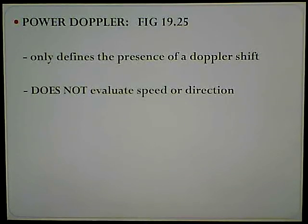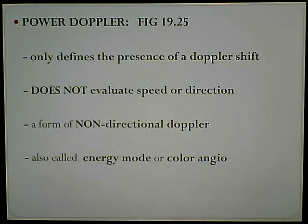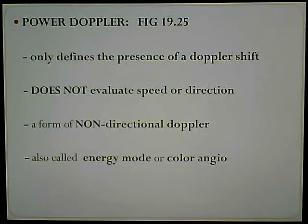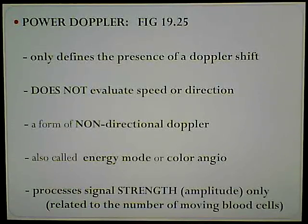Power Doppler - figure 1925. It only identifies the presence of a Doppler shift - it's just telling us that one is there. It does not evaluate speed or even direction. It just tells us that there is a Doppler shift there or some sort of flow presence. It is a form of non-directional Doppler. It is also called energy mode or color angio. Power Doppler processes signal strength or amplitude only - it is related to the number of moving blood cells.